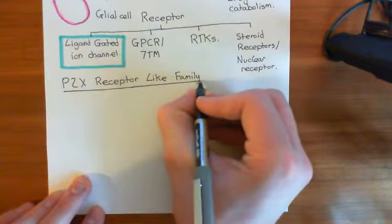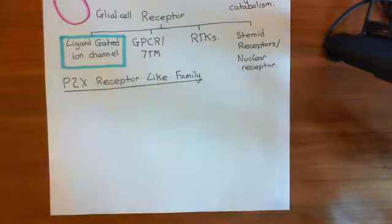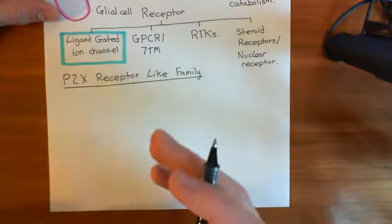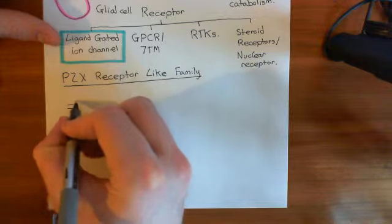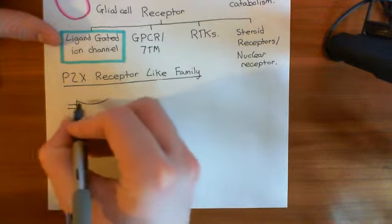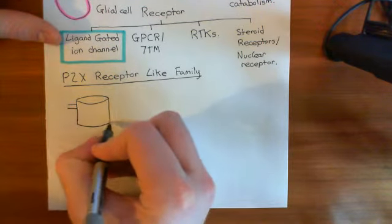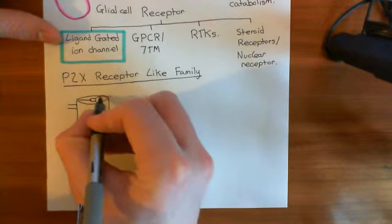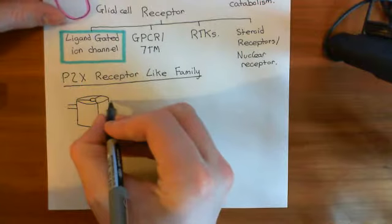What distinguishes the P2X receptor-like family of ligand-gated ion channels is their structure. They are made up of trimers of proteins. So these are a ligand-gated ion channel — they will open and conduct ions. The channel is a trimer: it's made up of three separate proteins. Here's the pore in the centre, and it's made up of three different proteins — three-thirds of the receptor.